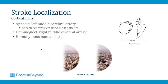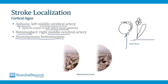Some other important cortical signs: strokes involving the left middle cerebral artery often cause aphasia, because the speech center is in the left cortex in most patients. Strokes involving the right middle cerebral artery often cause hemi-neglect, where patients do not perceive half of their visual world — if asked to draw a clock or a flower, half of it will be missing. Homonymous hemianopsia is a visual problem where half of the visual field in each eye is missing, and this can be seen in both MCA and posterior cerebral artery strokes.